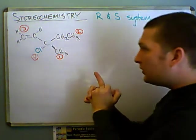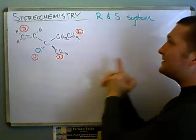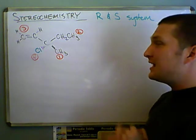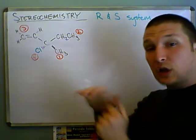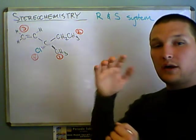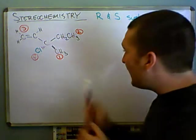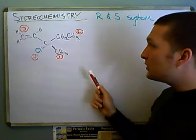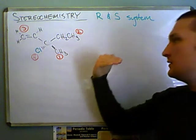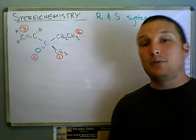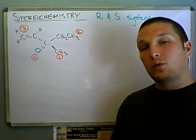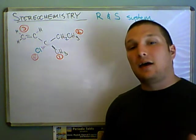Now we're at the point where we need to assign R or S. In order to do that, we need to take the lowest priority group and rotate it away from us. As we see right here, the lowest priority group — number one — is coming towards us. So now we're running into a problem, and in the next video we're going to learn how to deal with that.